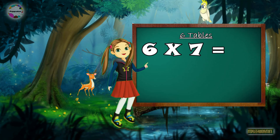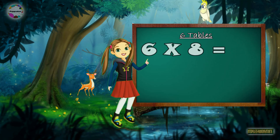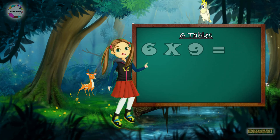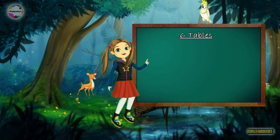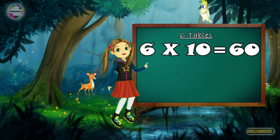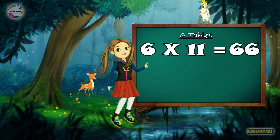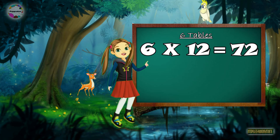6-7s are 42. 6-8s are 48. 6-9s are 54. 6-10s are 60. 6-11s are 66. 6-12s are 72.